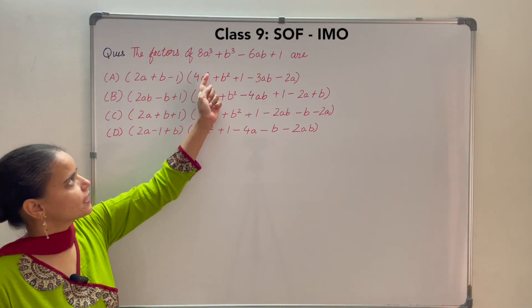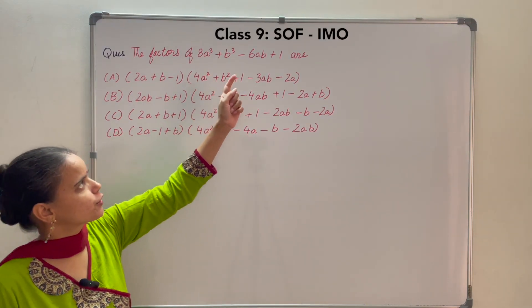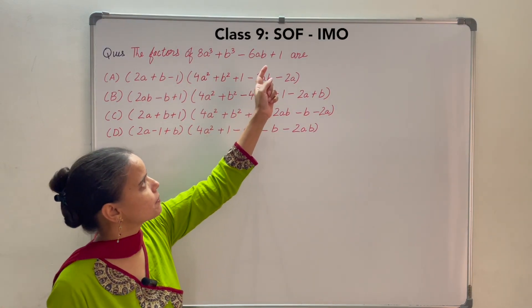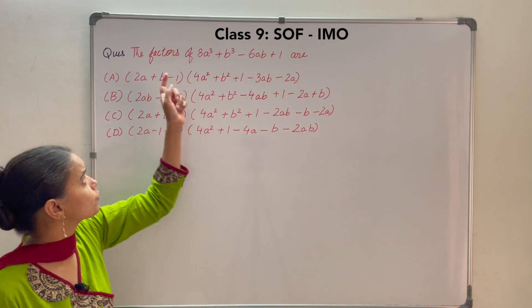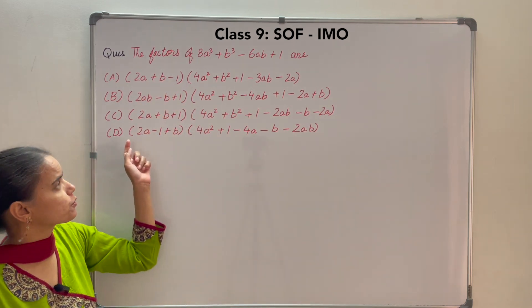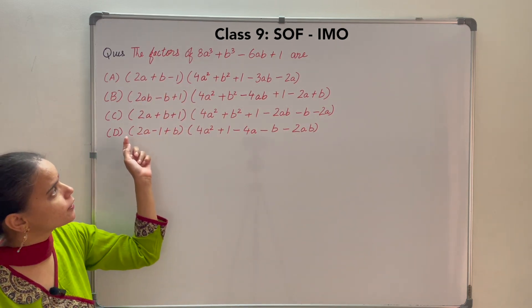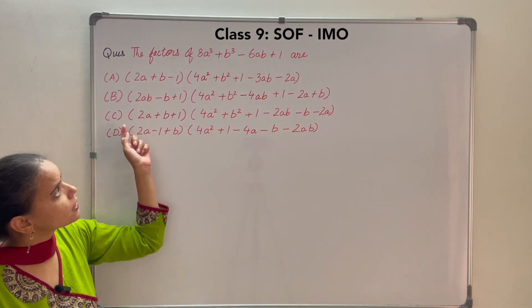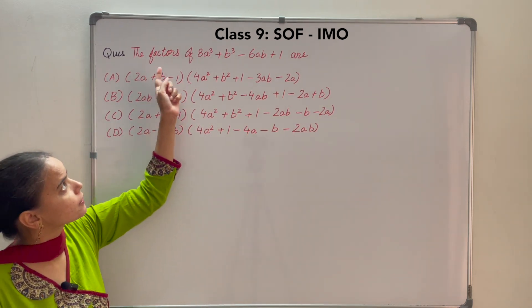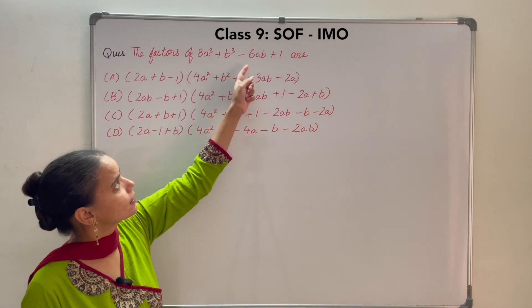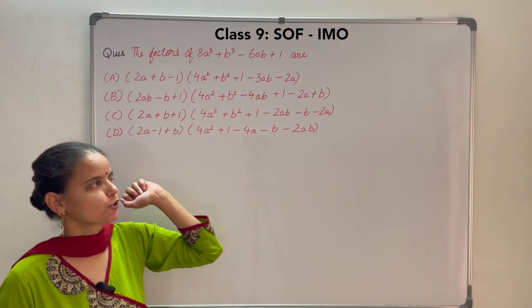So the factors of 8a cube plus b cube minus 6ab plus 1 are — out of the given options, you need to find out which is the correct option having the factors of this expression.